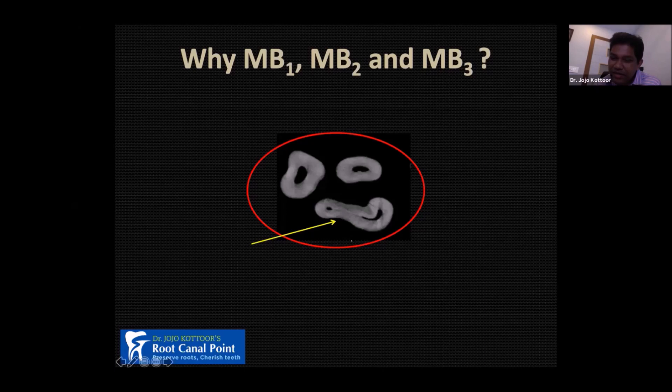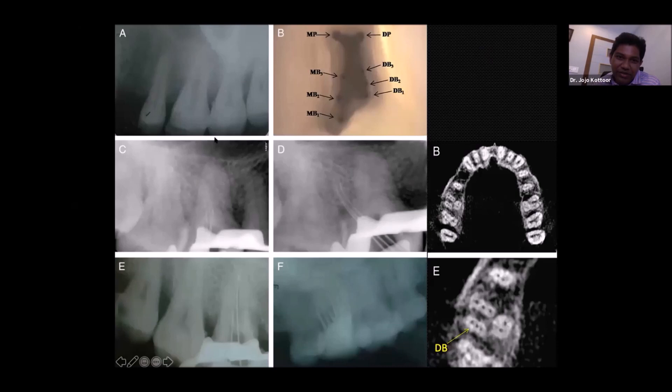Very rarely the distobuccal root can also be broader, which is where you get DB2 and DB3. In my eight-canal case, the distobuccal root in cross-section was really broad — as seen on the CBCT axial image — and that could be one reason why I could find three distal root canal orifices, which we generally don't get in the majority of cases.